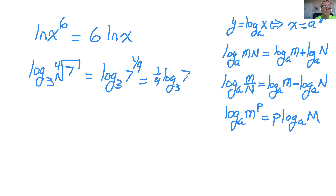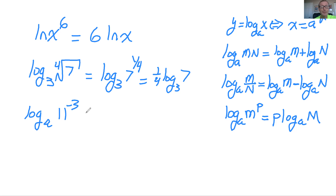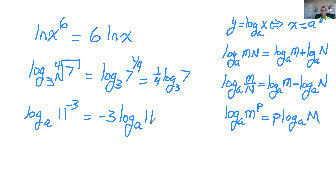One more example: say you had log base a of 11 to the negative three power. Our p value is negative three. So we rewrite it as negative 3 times log base a of 11.